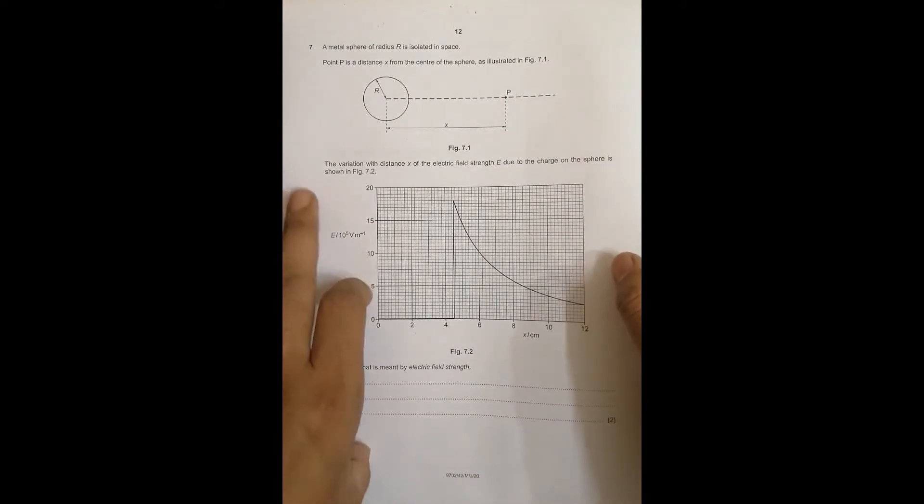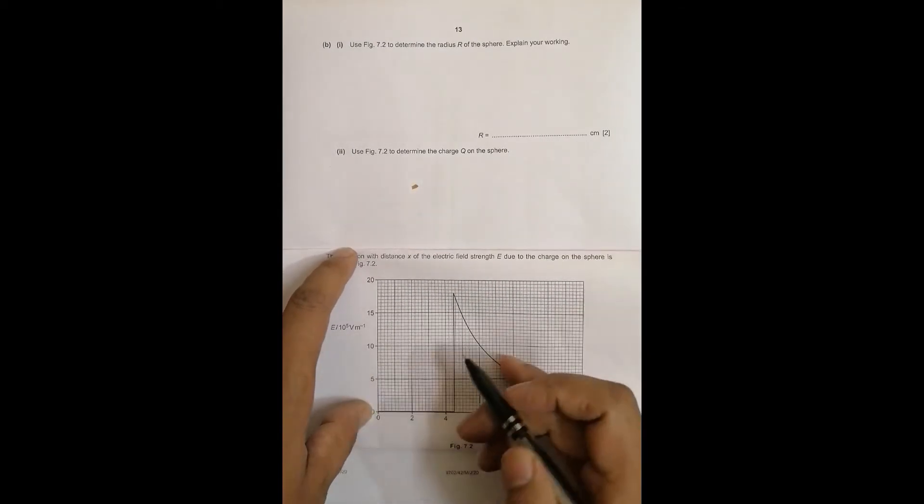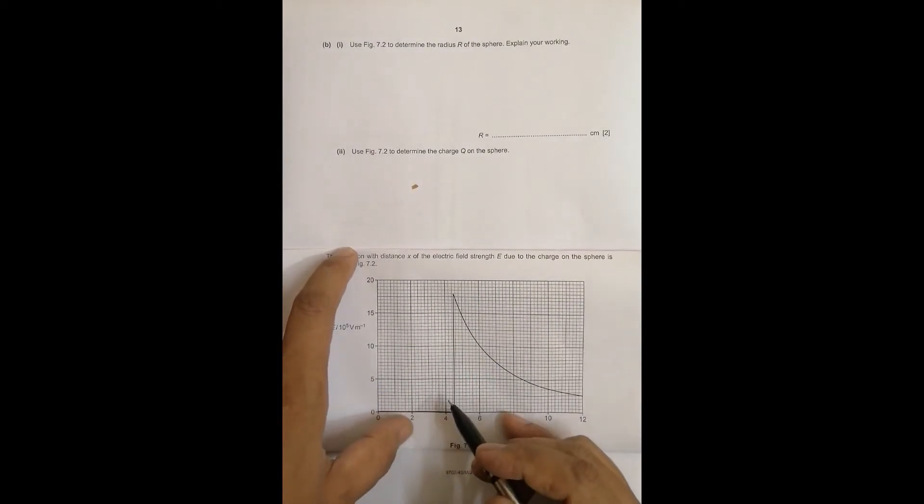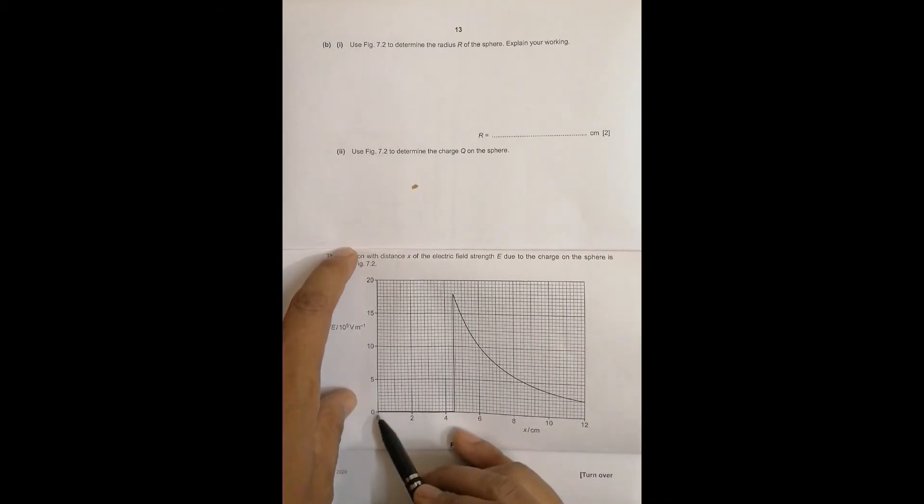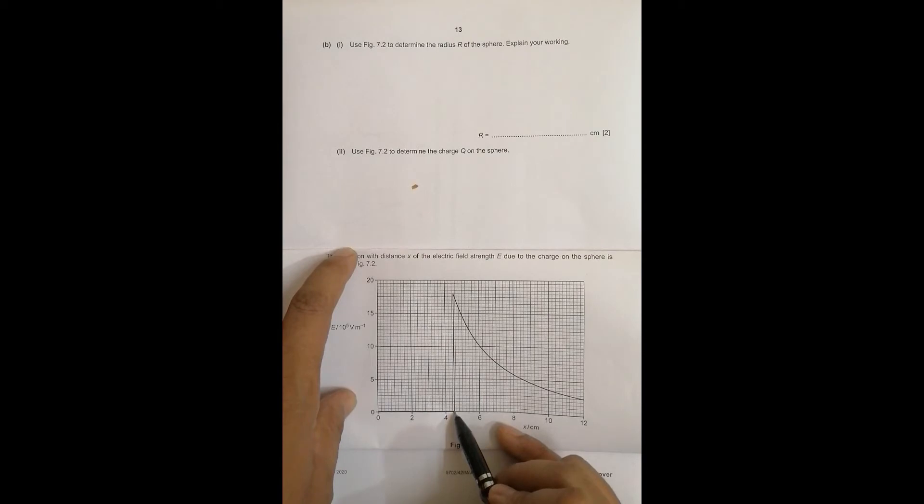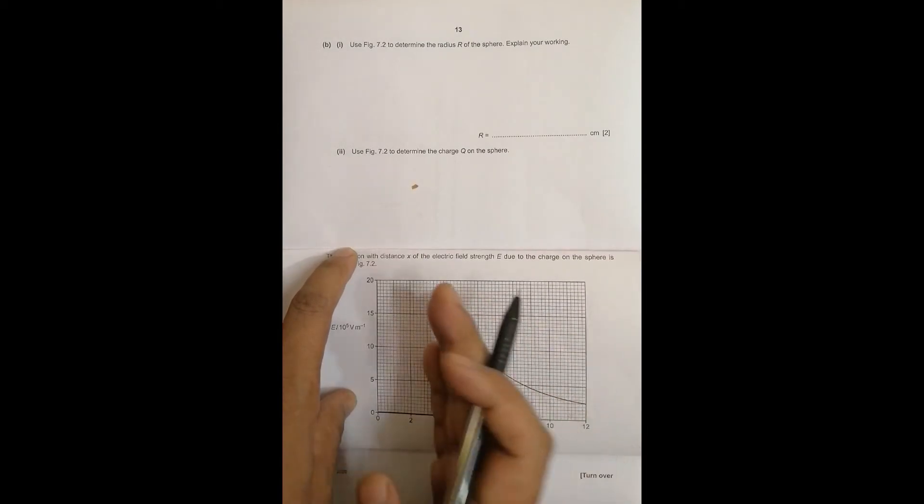My main focus will be from the next page. It says use figure 7.2 to determine the radius of the sphere. So we have to use this figure 7.2 to determine the radius of the sphere. What happens is inside a metal sphere it should be zero.